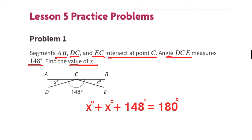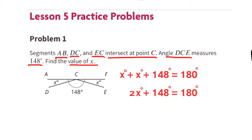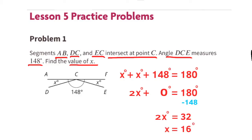x degrees plus x degrees plus 148 degrees equals 180 degrees — that's the same as 2x degrees plus 148 degrees equals 180 degrees. To solve for x, we'll subtract 148 from both sides of the equal sign. That leaves us with 2x degrees equals 32.